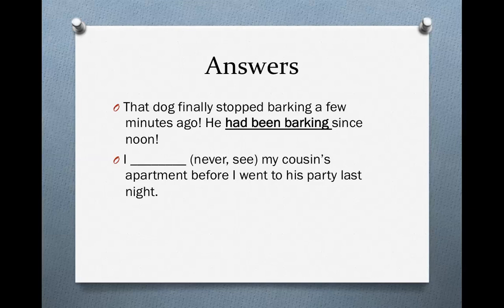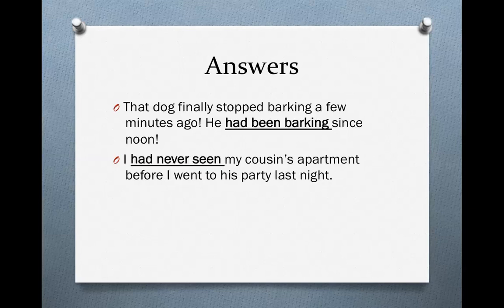In the second sentence: I had never seen my cousin's apartment before I went to his party last night. We have two events in the past — I had never seen my cousin's apartment, and I went to his party last night. The first event listed occurs before the other event, and we don't have a length of time, so we use the past perfect: had never seen.